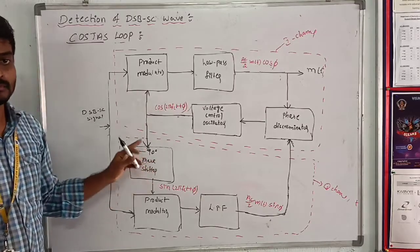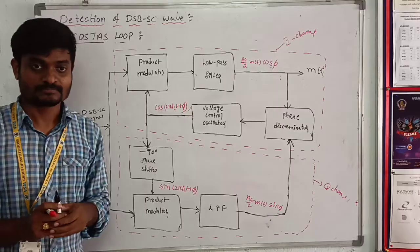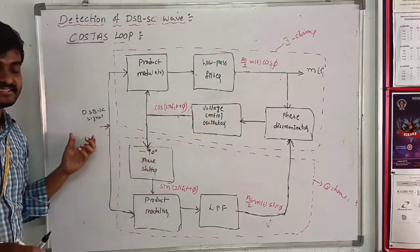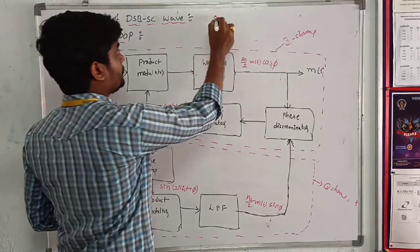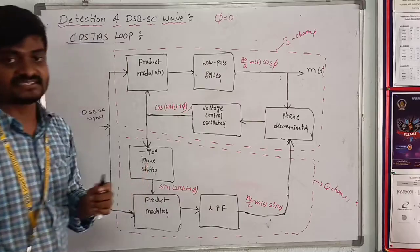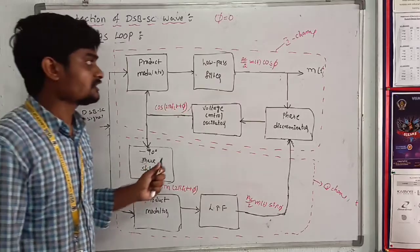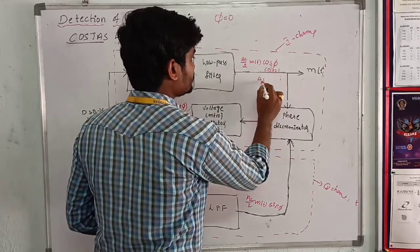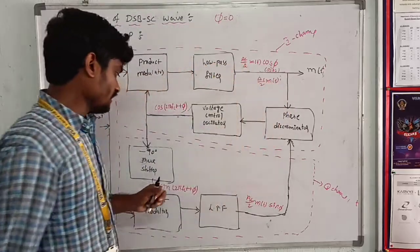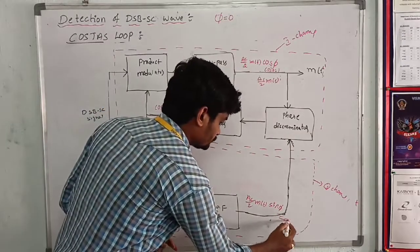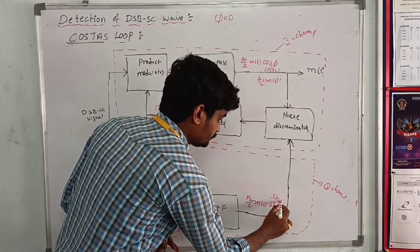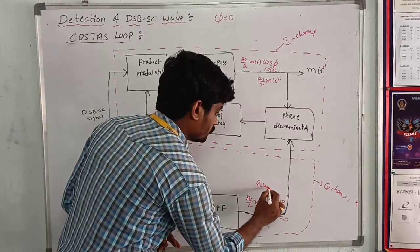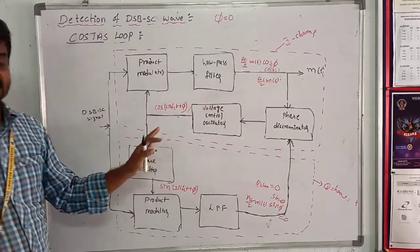This is the block diagram of Costas loop and its operation. When the local oscillator signal is the same as the carrier signal frequency fc, then φ equals 0. The phase error should be 0. Then the output of the I channel is cos(0) equal to 1, giving Ac/2 m(t), and Q channel output is 0. This is the desired output.